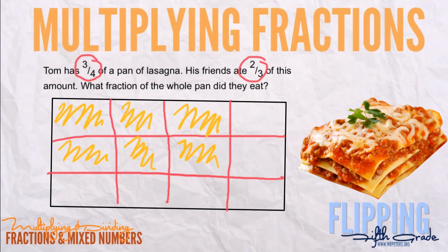Now I'm just going to count the spaces that we ate: one, two, three, four, five, six. So they ate six out of the total twelve, which reduces to one-half. So when asked what fraction of the whole pan did they eat, they ate one-half of that pan.